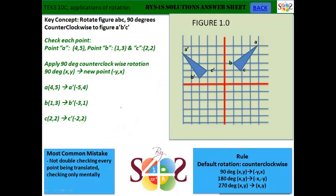Figure 1.0C key concept: rotate figure ABC 90 degrees counterclockwise to figure A'B'C'. First, we're going to check each point. Point A is at (4,5), point B is at (1,3), and point C is at (2,2).